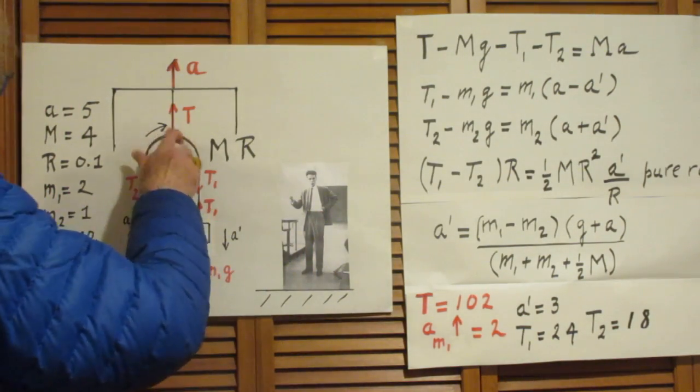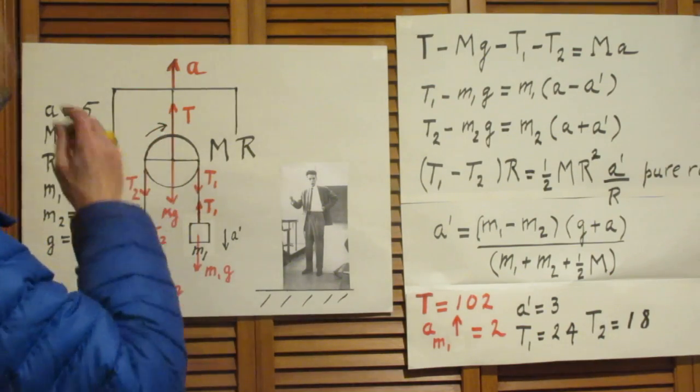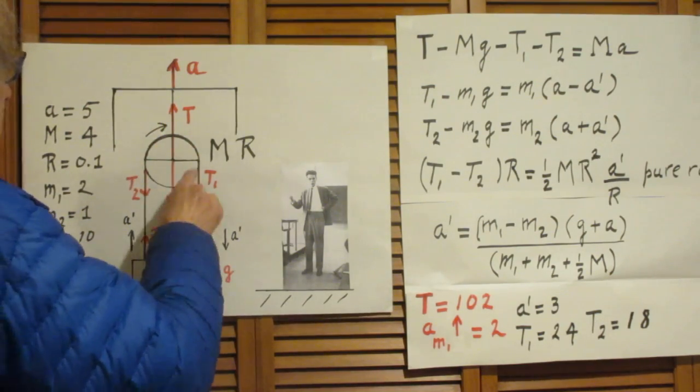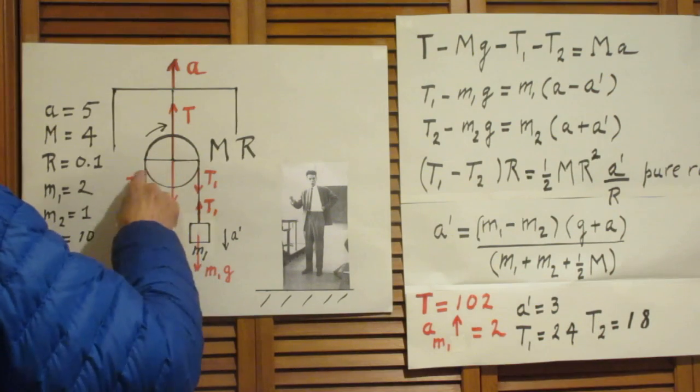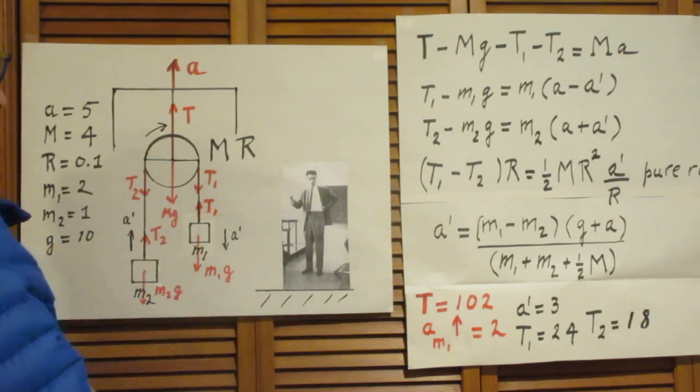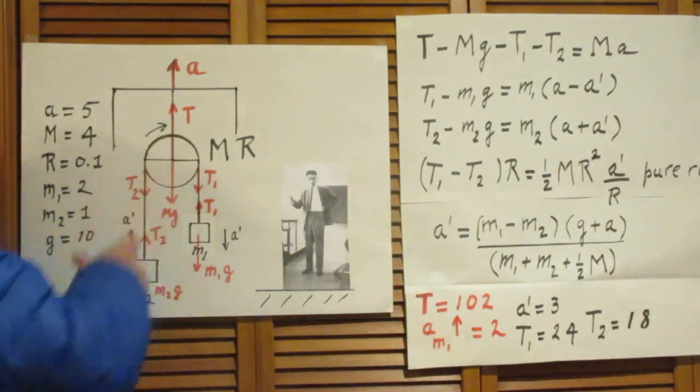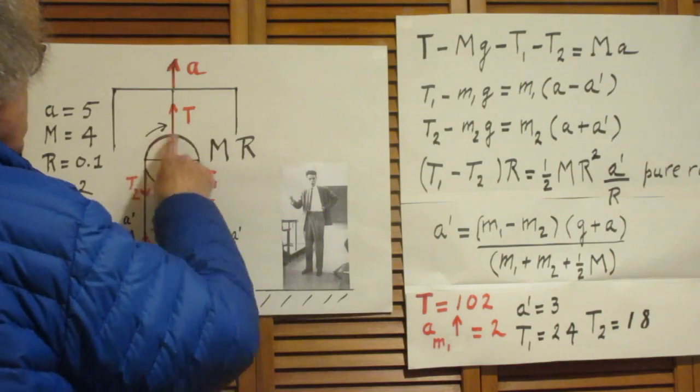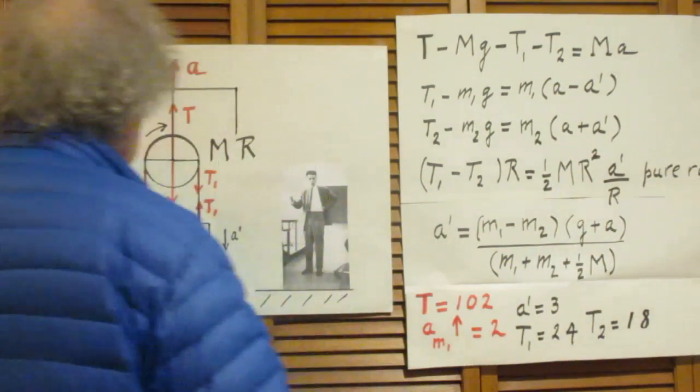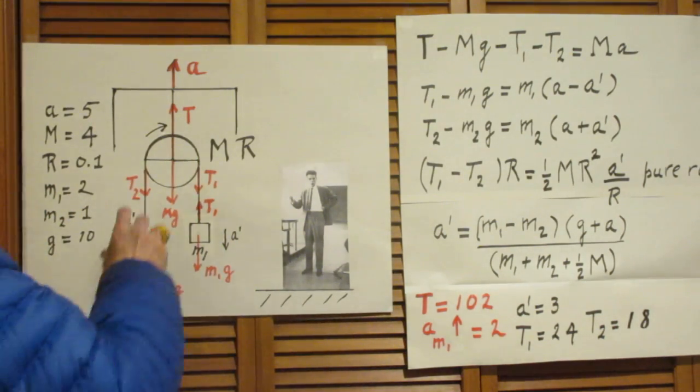And then we get the torque equation. Again, you can step inside the elevator - that is perfectly fine. There is a clockwise torque, positive torque T1 times radius R, this angle is 90 degrees, and negative torque T2 times R, also 90 degrees.